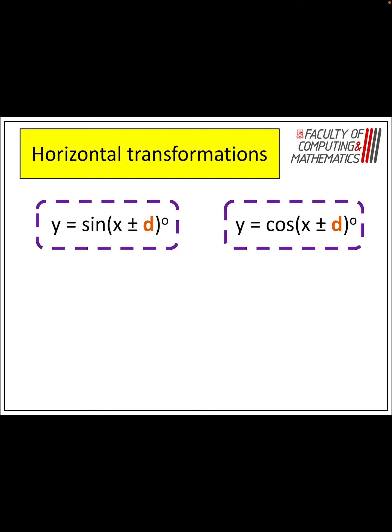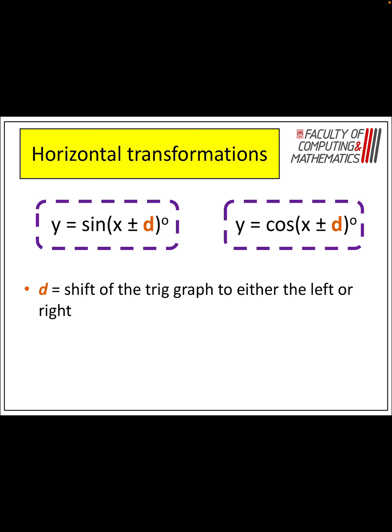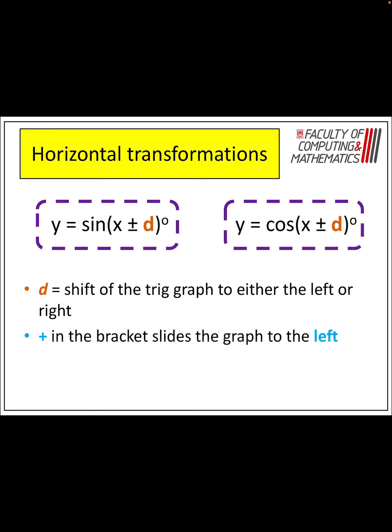Last one: the horizontal transformation, also called the phase angle. This is going to shift the graph left or right. It's actually a correctional value, so it doesn't move it in the way you logically think it will. If it's a plus in the bracket, you're going to move it to the left — which is counterintuitive, but it's a correctional factor to move it back to the original graph. So plus moves it to the left, and negative moves it to the right.